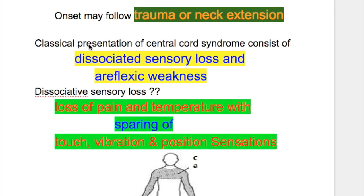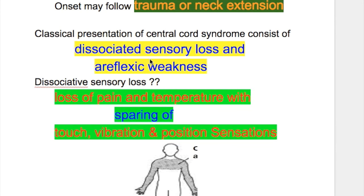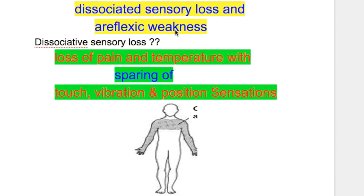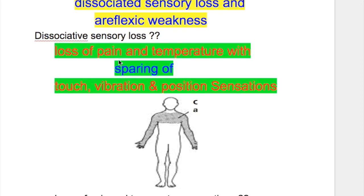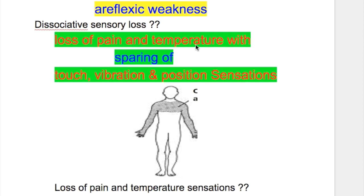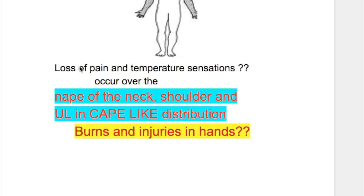The classical presentations are dissociated sensory loss and areflexic weakness. The type of dissociated sensory loss produced in syringomyelia is loss of pain and temperature sensation with sparing of touch, vibration, and position senses. Pain and temperature fibers are carried by the lateral spinothalamic tract, while touch, vibration, and position senses are carried by the dorsal column.